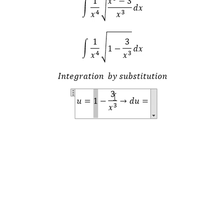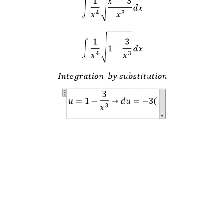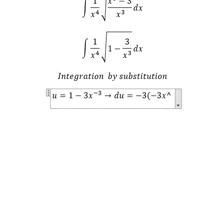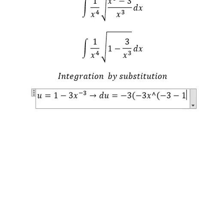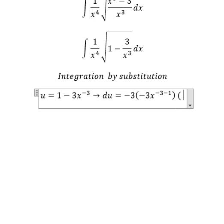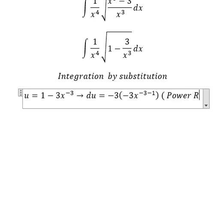This one that is about the constant so you got number zero. This one we put negative number 3 in here. First derivative of 1 over x to the power of 3 we can write like this and this one that is about negative number 3x to the power of negative number 3 minus number 1. And this is about the power rule of the derivative.